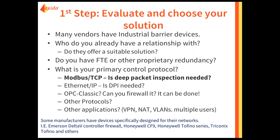We'll get to the actual implementation of deep packet inspection in just a few slides. The first step: evaluate your solution, and evaluate the vendors you already have an association with. Many vendors offer some sort of industrial barrier device. You don't necessarily need to find a new vendor — they may have something that works extremely well. But also consider: do you have fault-tolerant Ethernet or any other proprietary redundancy network to take into account? What's your primary protocol that you're trying to firewall? Is it Modbus TCP? Other protocols have some sort of deep packet inspection solution, but others do not.